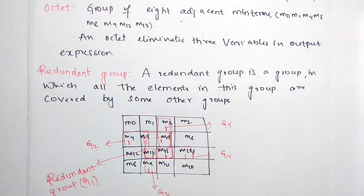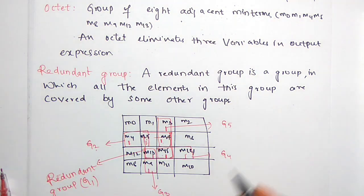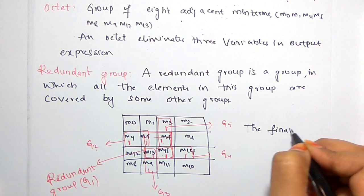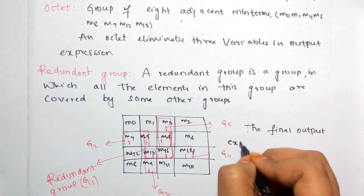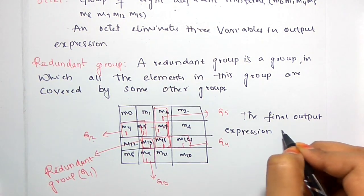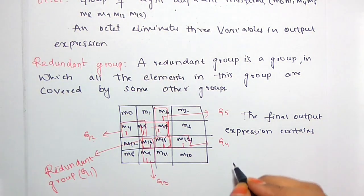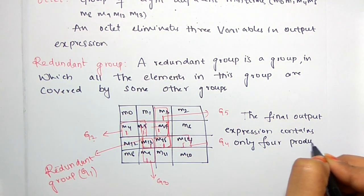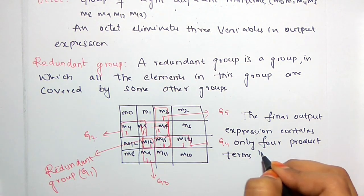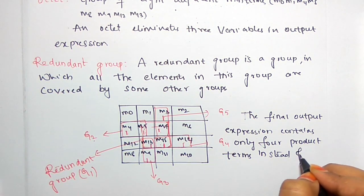The final output expression contains only four product terms instead of five terms. We have five groups, but since one of the groups is a redundant group, the final output expression contains only four product terms.